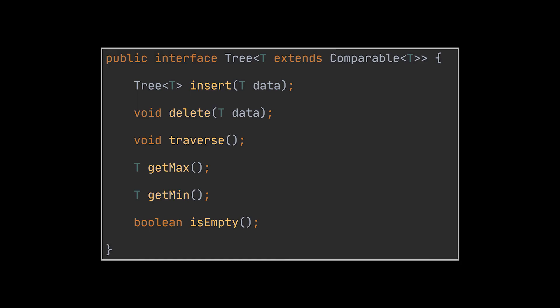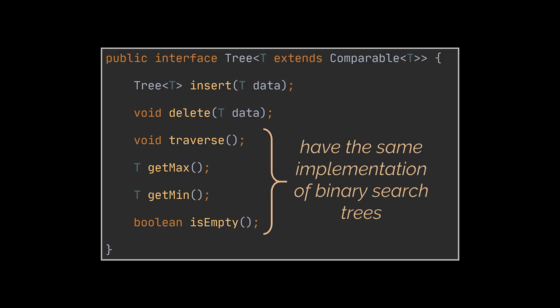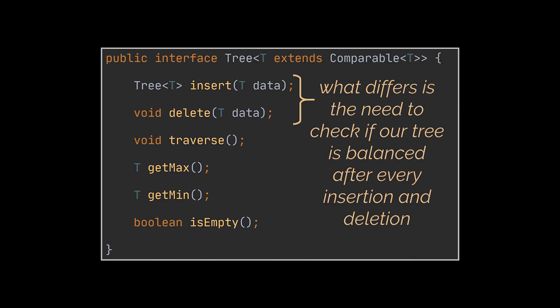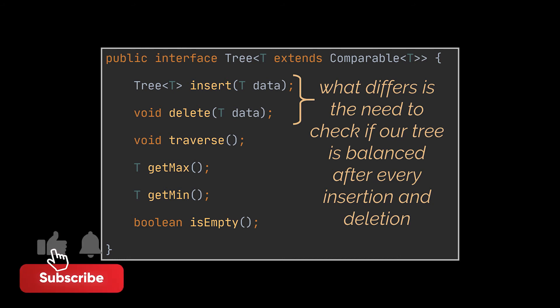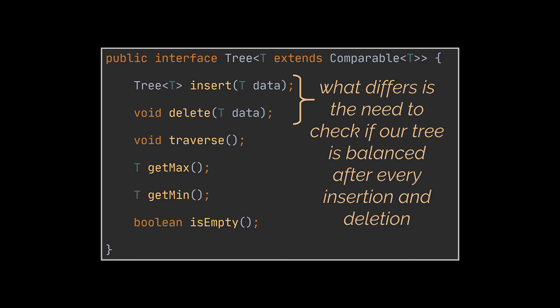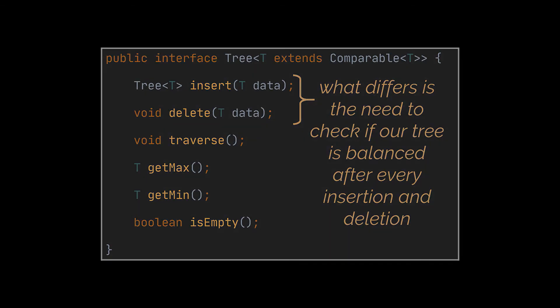The Tree interface we implement is exactly the same as for the binary search tree. Checking if the tree is empty, retrieving maximum or minimum elements, and traversing the tree all have the exact same implementation as in the BST video. What we are left with are the insert and delete operations, which are also similar, but after every insertion and deletion we must ensure the tree is still balanced.